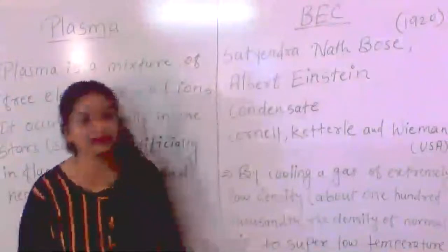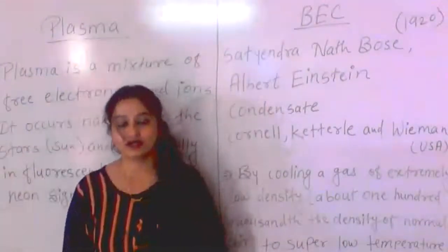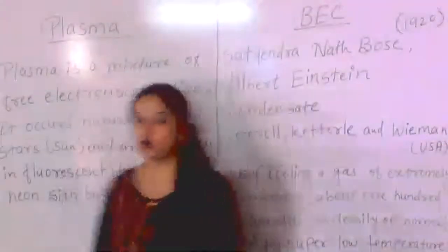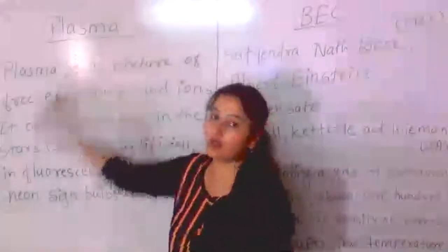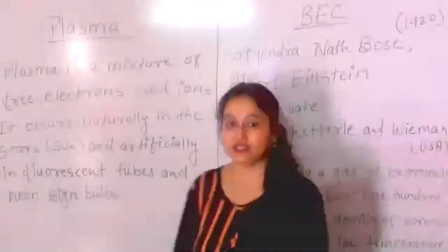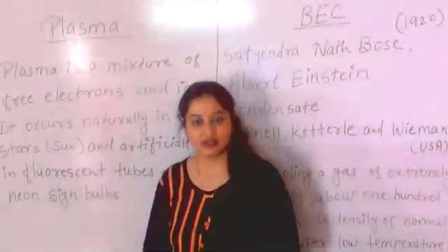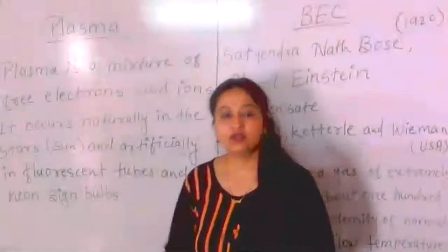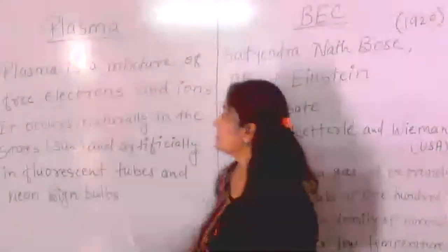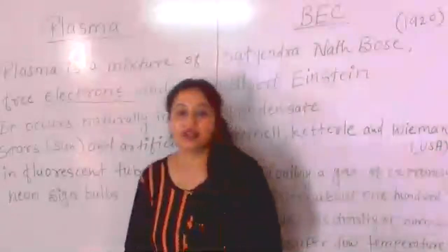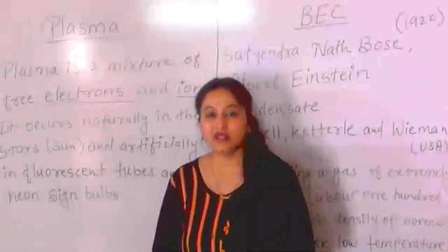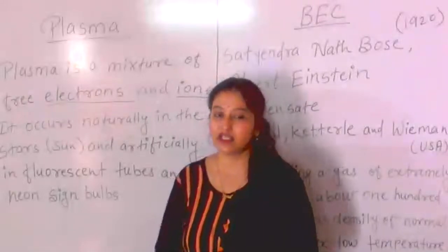Today we will talk about plasma — its physical and chemical basis. We will discuss what plasma is. I will try to explain about electrons and ions. Plasma is the fourth state of matter. Plasma is a mixture of electrons and ions. We will study the details of atoms in the third or fourth chapter.